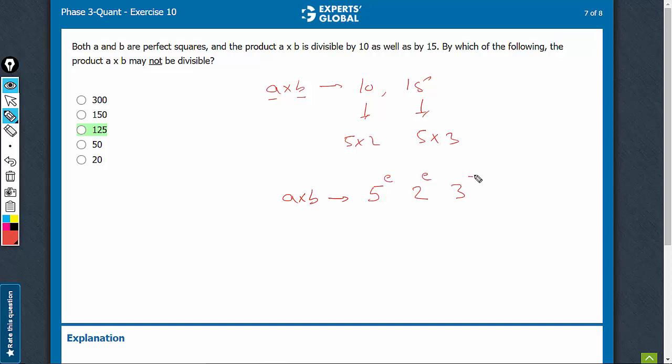Even, even, even. The least even value possible is 5 square, 2 square, 3 square—900. That means the least possible value of A into B is 900.